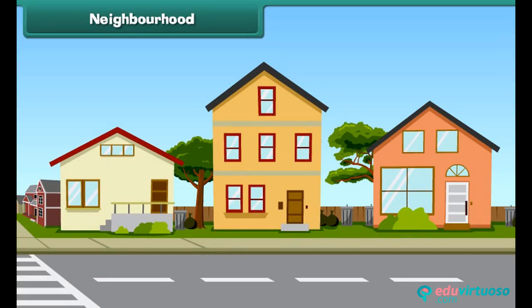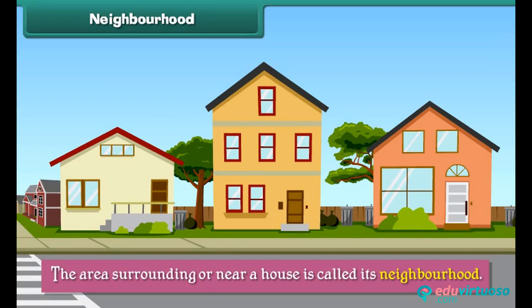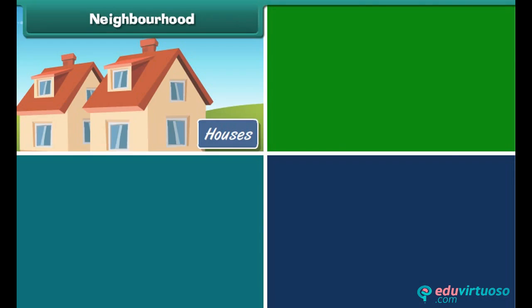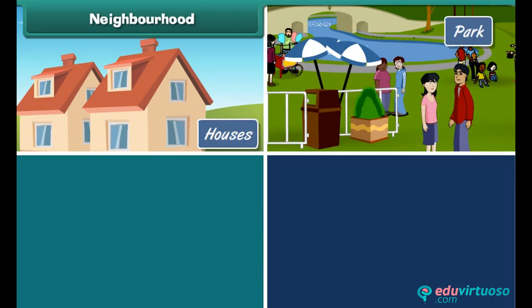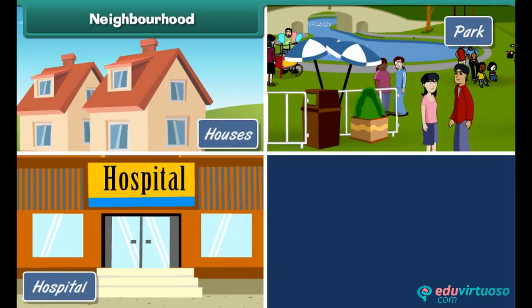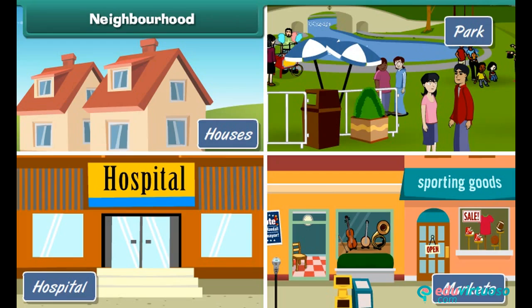Neighborhood: The area surrounding or near a house is called its neighborhood. Nearby houses, parks, hospitals, and markets are all part of a neighborhood.